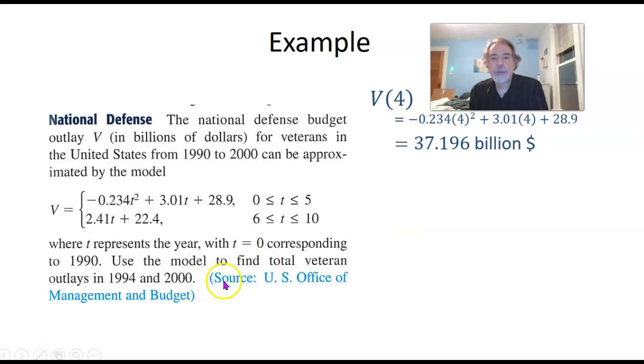And then for the year 2000, that's when we put in 10 for T. So V of 10—well, 10 is down here between 6 and 10, so we use this formula. We calculate 2.41 times 10 plus 22.4, and that works out to be 46.5. So $46.5 billion.